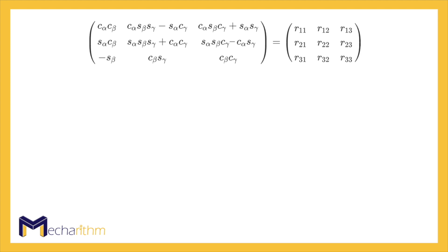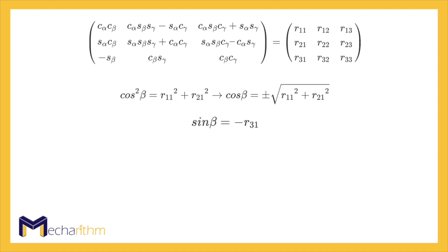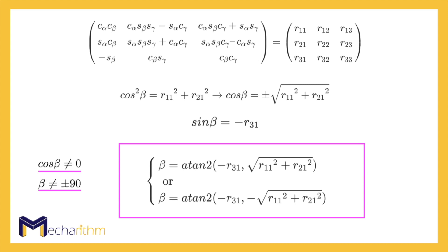To solve this, we should equate the expression for the rotation matrix found for the Euler angles to the given rotation matrix. From the first two elements of the first column, we can find an expression for cosine beta. If cosine beta is not equal to zero — and thus beta is not equal to 90 degrees and minus 90 degrees — then the expressions for beta can be found as these equations. In the next slide, we will talk about the atan2 function and why it is important in robotics.